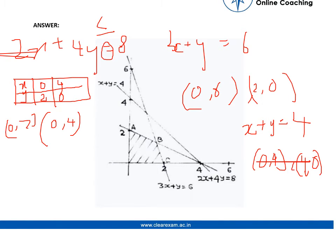So plotting the graph, this line is 2x plus 4y is equals to 8. So here we have two points 0, 2 and 4, 0.